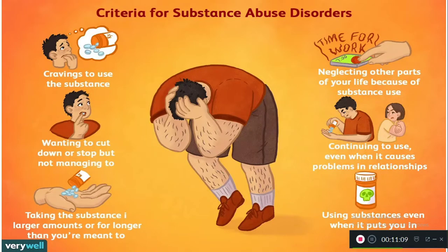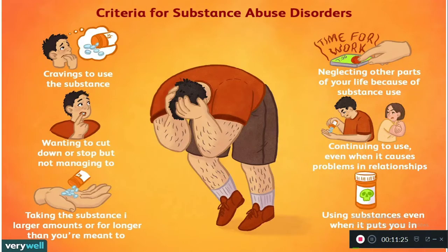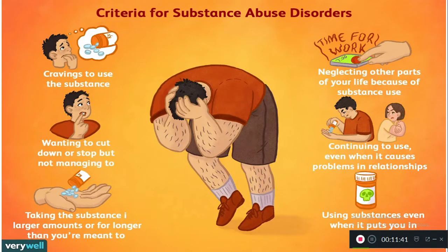Another criterion is continuously taking alcohol even though personal relationships are affected. The last criterion is use of the substance even when it puts you in physical problems — for example, many people who take alcohol for a long period know they have liver or heart problems, but still take alcohol. These people come under substance use disorders.